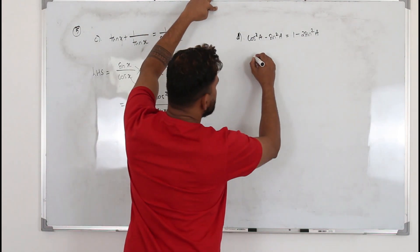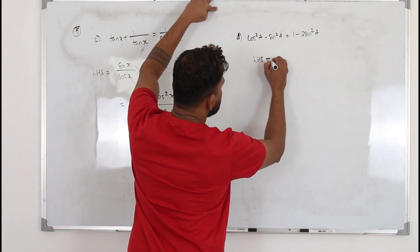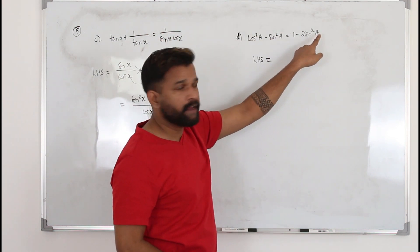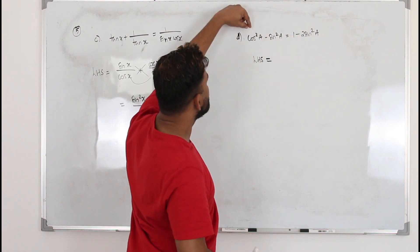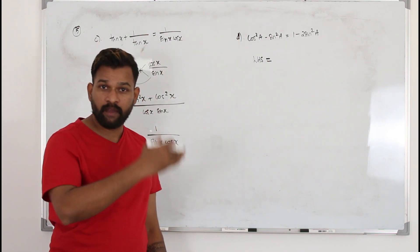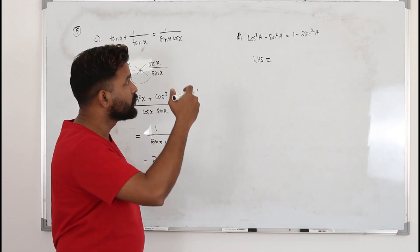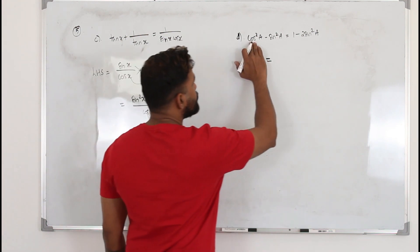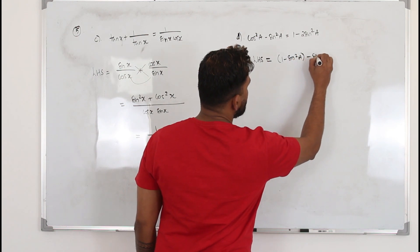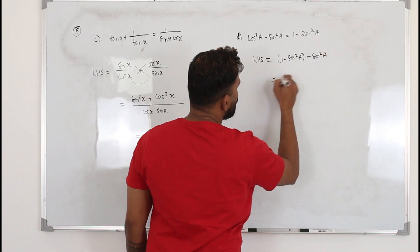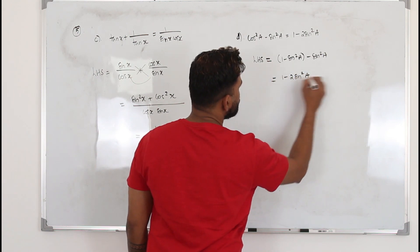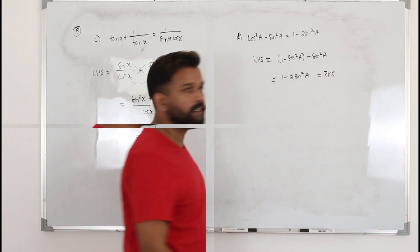For the next proof, start with the left-hand side. We need to prove it equals 1 - 2sin²x, and there is no cos²x on the right side. So we need to eliminate cos²x. From the identity, cos²x = 1 - sin²x. Replace cos²x with 1 - sin²x, then subtract sin²x and simplify the bracket to get 1 - 2sin²x. Proven.